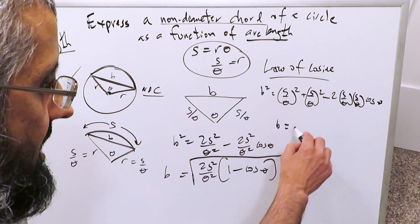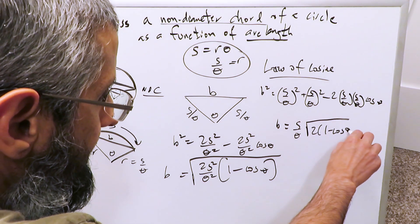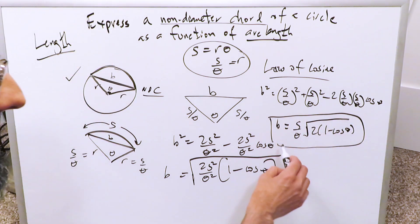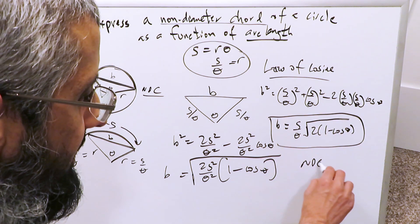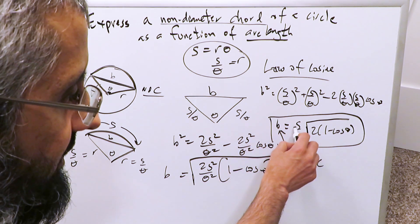You have perfect squares which can come out here. B is equal to S over theta, and then you'll have 2 into 1 minus cosine theta in parentheses but under this root, and here's your final answer. This right here, your non-diameter chord B is expressed as a function of arc length because I have the arc length variable in here, S.